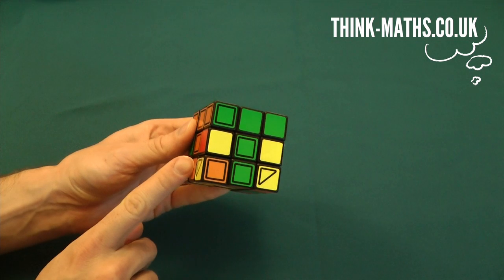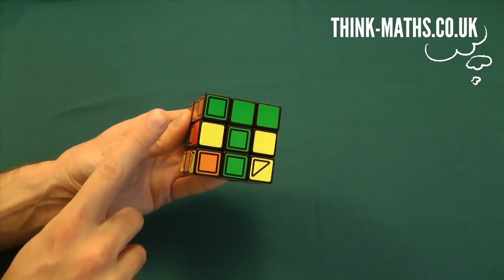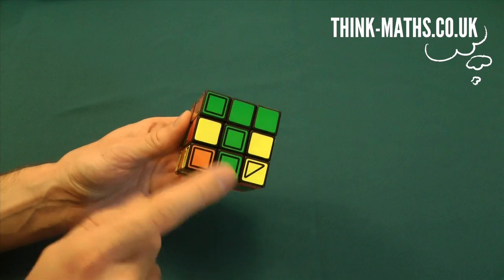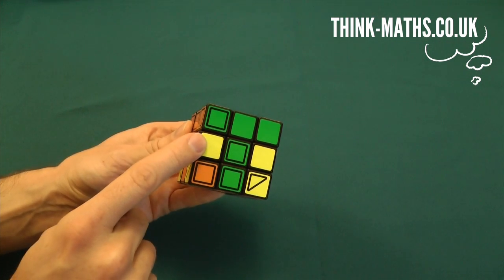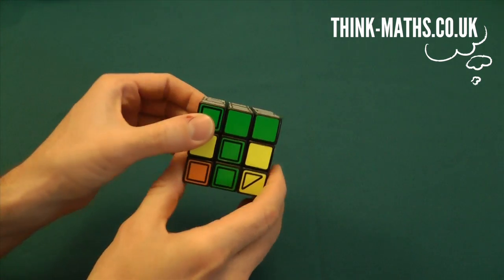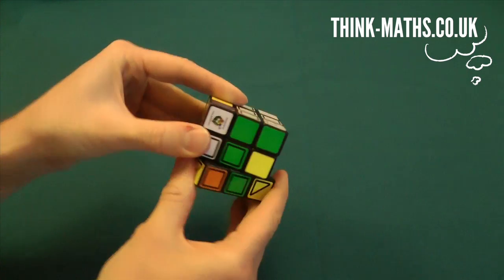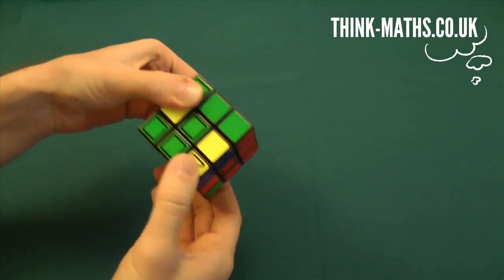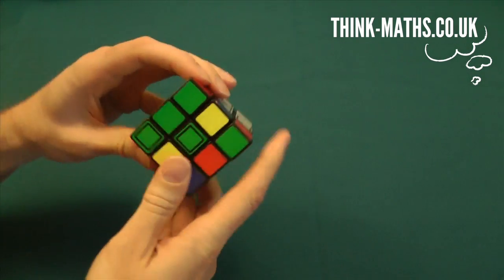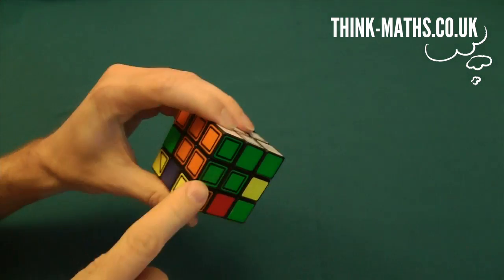Now this time, last time it was over there. And we did edge swap two, then edge swap one. And it ends up over here. To go from there to here, you just do one first and then two. So if we do one first, so it's clockwise, clockwise, anti, anti. And then we do two. So anti, anti, clockwise, clockwise. There it is.